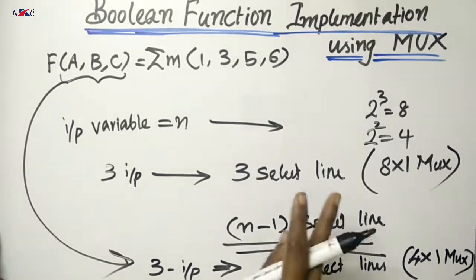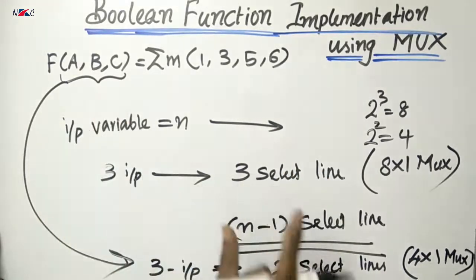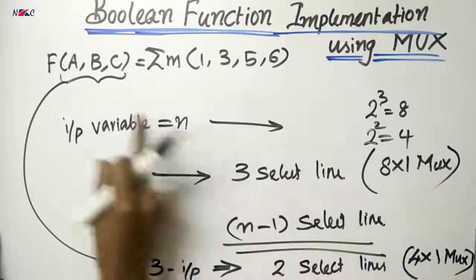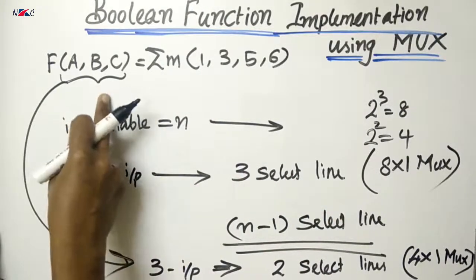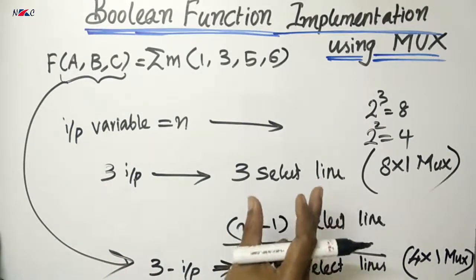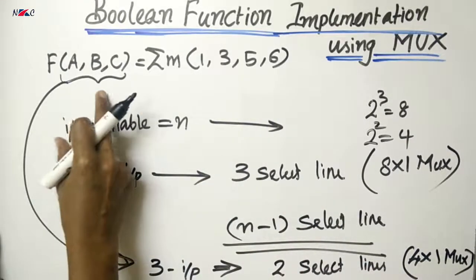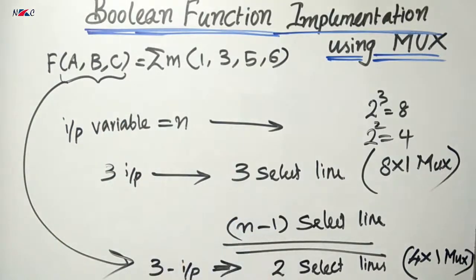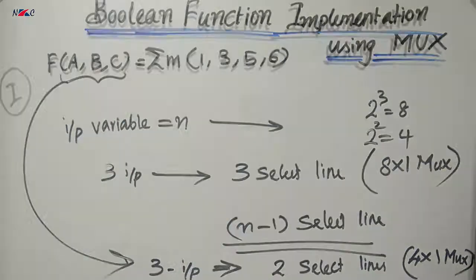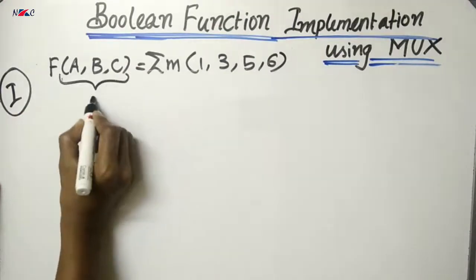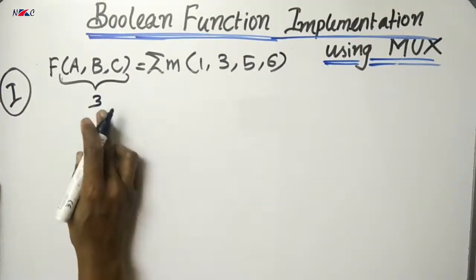So the first method is: choose a multiplexer where the number of select lines equals the number of input variables. The second method is: the number of select lines is one less than the number of variables. For the first method, we need three select lines for three input variables.